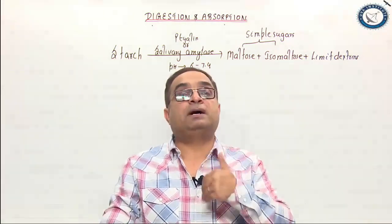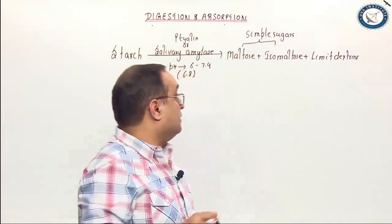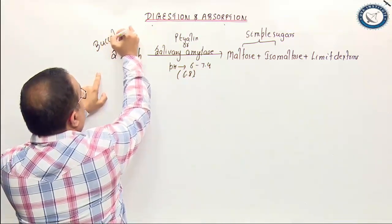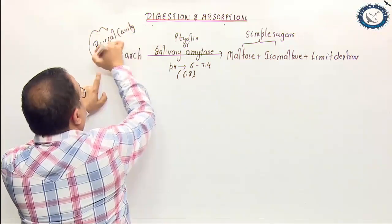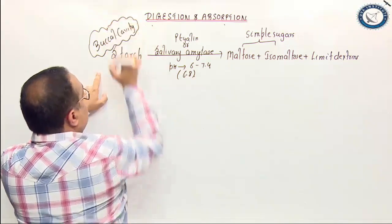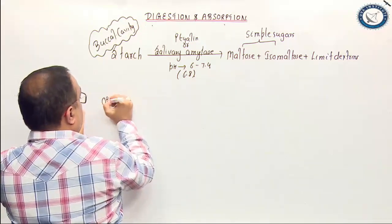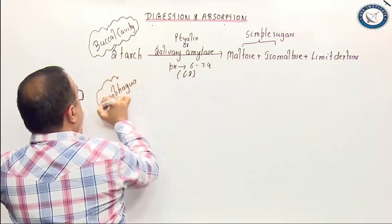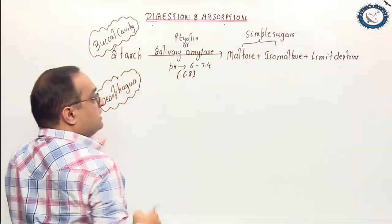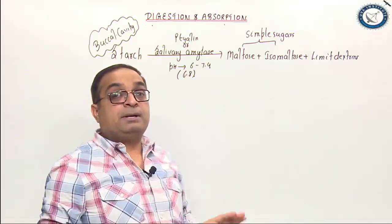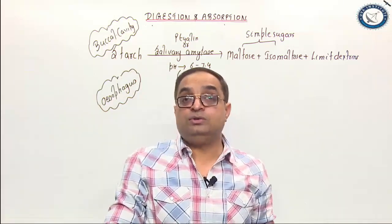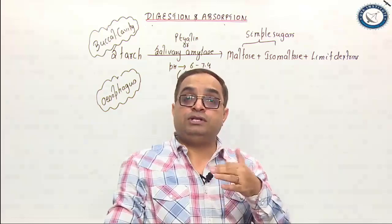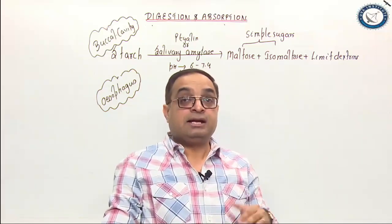Esophagus does not secrete any digestive enzyme; it is just a passage for passing food to your stomach. In the buccal cavity, it is the beginning of starch digestion. The starch digestion continues in the esophagus because salivary amylase continues its activity. When the food reaches the stomach, the pH is acidic because the stomach contains hydrochloric acid.